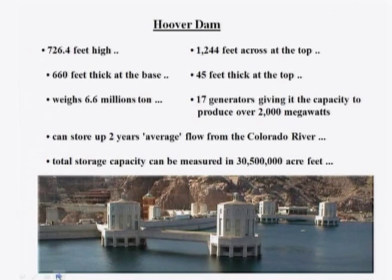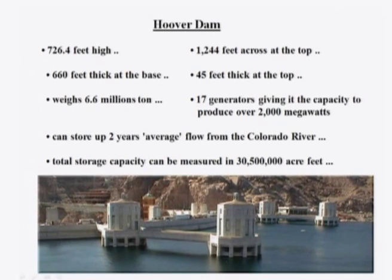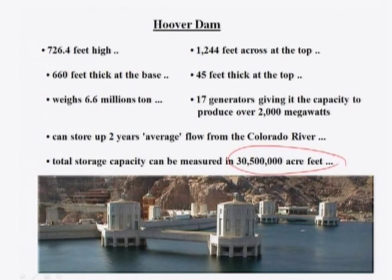The Hoover Dam is 726.4 feet high, 1,244 feet across at the top, 660 feet thick at the base, and 45 feet thick at the top. Its total storage capacity is about 30,500 thousand acre-feet, and it can store up to 2 years of average flow from the Colorado River.